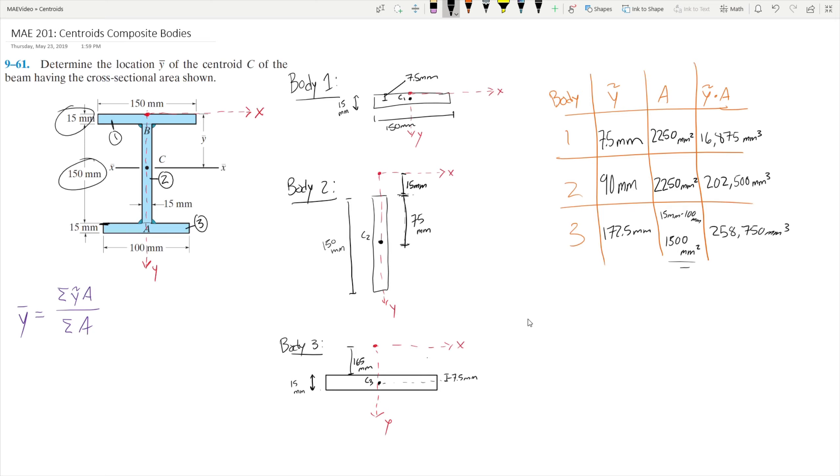Now from here, we look at our formula. We're going to take the sum of our y-tilde times a. We'll sum our a's first, so that's going to be 2250 plus 2250 plus 1500, which equals 6000 square millimeters. And then the sum of our y-tilde times a is going to be 16,875 plus 202,500 plus 258,750, which gives us 478,125mm cubed.